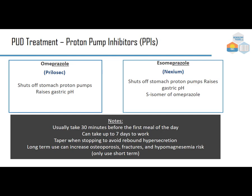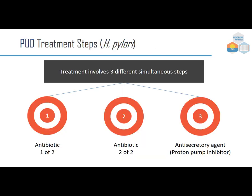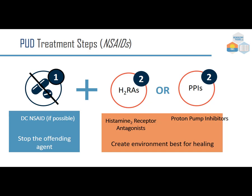For H. pylori-caused ulcers, use at least two antibiotics plus an anti-secretory agent like a PPI — triple therapy. For NSAID-caused ulcers, discontinue the NSAID if possible, though some patients (e.g., those with arthritis) cannot stop. Then use H2 receptor antagonists or PPIs to create an environment conducive to healing — the goal is not directly healing the ulcer, but creating conditions for it to repair itself.